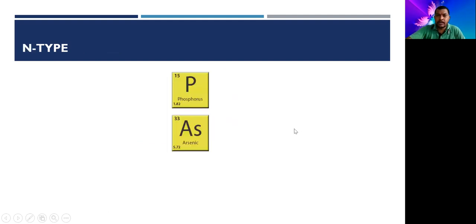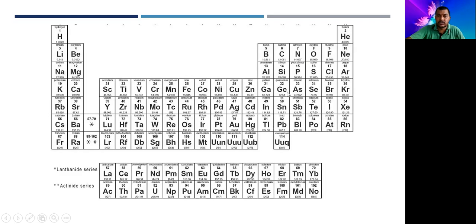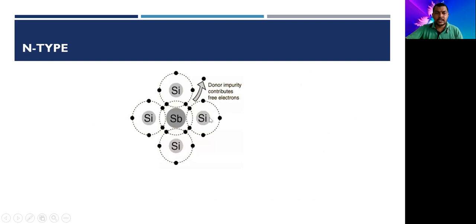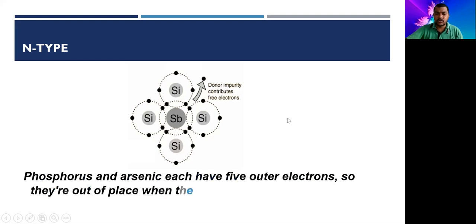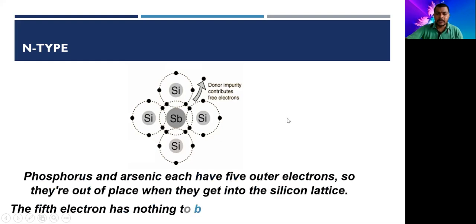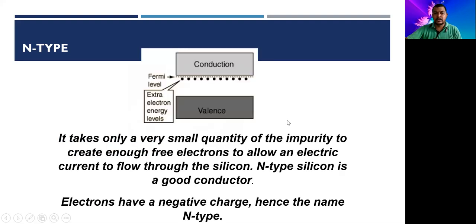For the N-type semiconductor, pentavalent impurities like phosphorus and arsenic are added. These are Group 5 elements: nitrogen, phosphorus, arsenic, antimony, and bismuth. They have five electrons in their outermost shell. Four electrons make four covalent bonds, and one electron is excess. Due to that excess electron, it gains negative polarity and is therefore called an N-type semiconductor. Only a very small quantity of impurity is needed, and the excess electrons give a negative charge.